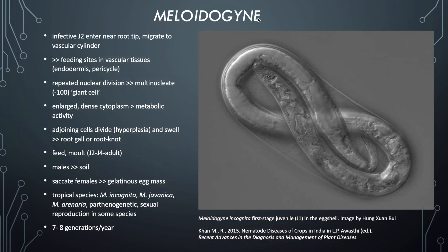To recap the important parts of the life cycle: the J2 is the infective stage and it enters near the root tip, migrating to the vascular cylinder of the plant. It establishes a feeding site in the vascular tissue in the endodermis or pericycle — the areas where the plant puts its resources in order to grow. The cells around that tissue undergo repeated nuclear division as a result of the nematode feeding and the exudates that force the plant to produce giant cells, which the nematode feeds on via its stylet. This results in multinucleate cells, with up to 100 nuclei present within these giant cells.